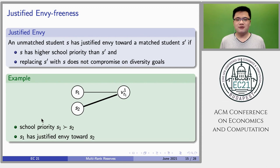Consider the example in this figure. Suppose there are two students and one reserved seat. Student S1 has higher school priority, but the student S2 is matched. In that case, student S1 has justified envy toward S2 since we can replace S2 with S1 while still achieving the same diversity goal.